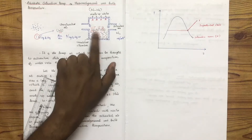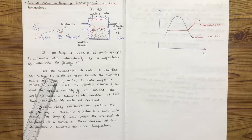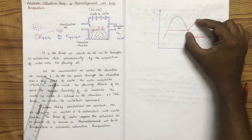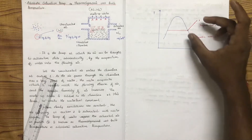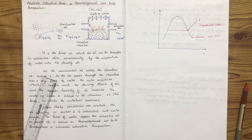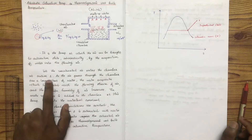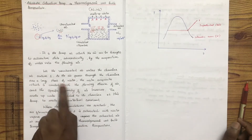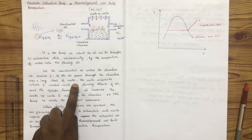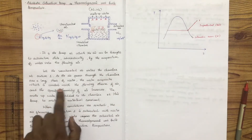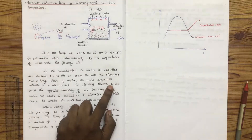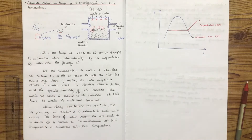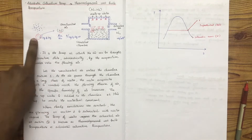The water molecules are going to evaporate into the air and heat will be absorbed. The unsaturated air enters the chamber at section 1. As the air passes through the chamber over a long sheet of water, the water evaporates and is carried with the flowing stream of air. The specific humidity of the air increases.